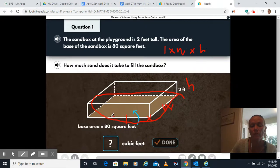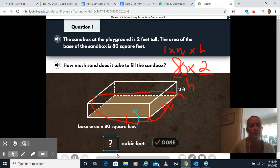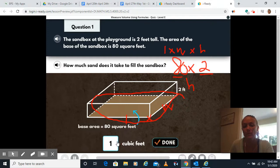Remember volume is length times width times height. They already figured out the area for us here, which is length and width. So that's 80 times the height, which is two. Well, 80 times two, I know eight times two is 16. So 80 times two would be 160. I'm going to type 160 in here and click done.